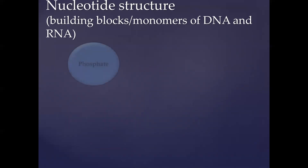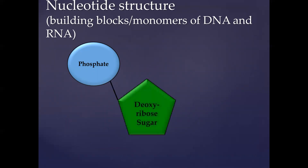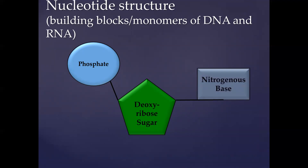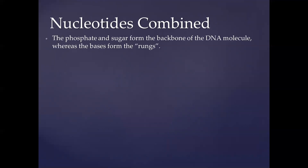The structure of a nucleotide: every nucleotide has a phosphate molecule, joined to a deoxyribose sugar. In DNA we have a deoxyribose sugar, whereas in RNA we have a ribose sugar — that's where you can see the difference in the name of the molecule. These two are joined to a nitrogenous base. There are four different types of nitrogenous bases within DNA. The phosphates and the sugar form the backbone of the DNA molecule.